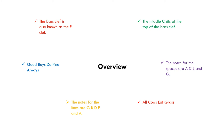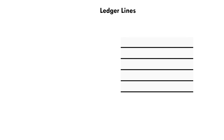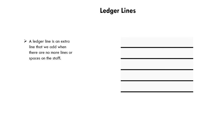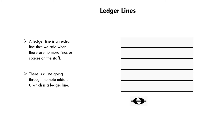We can now move on to our final section which is ledger lines. A ledger line is an extra line that we add when there are no more lines or spaces left on the staff. Throughout this clip we have seen a few ledger lines — for example, middle C has a little line going through the note which is our ledger line. You can use as many ledger lines as you want, but they tend to only get used up to middle C on both clefs, just to keep it simpler.